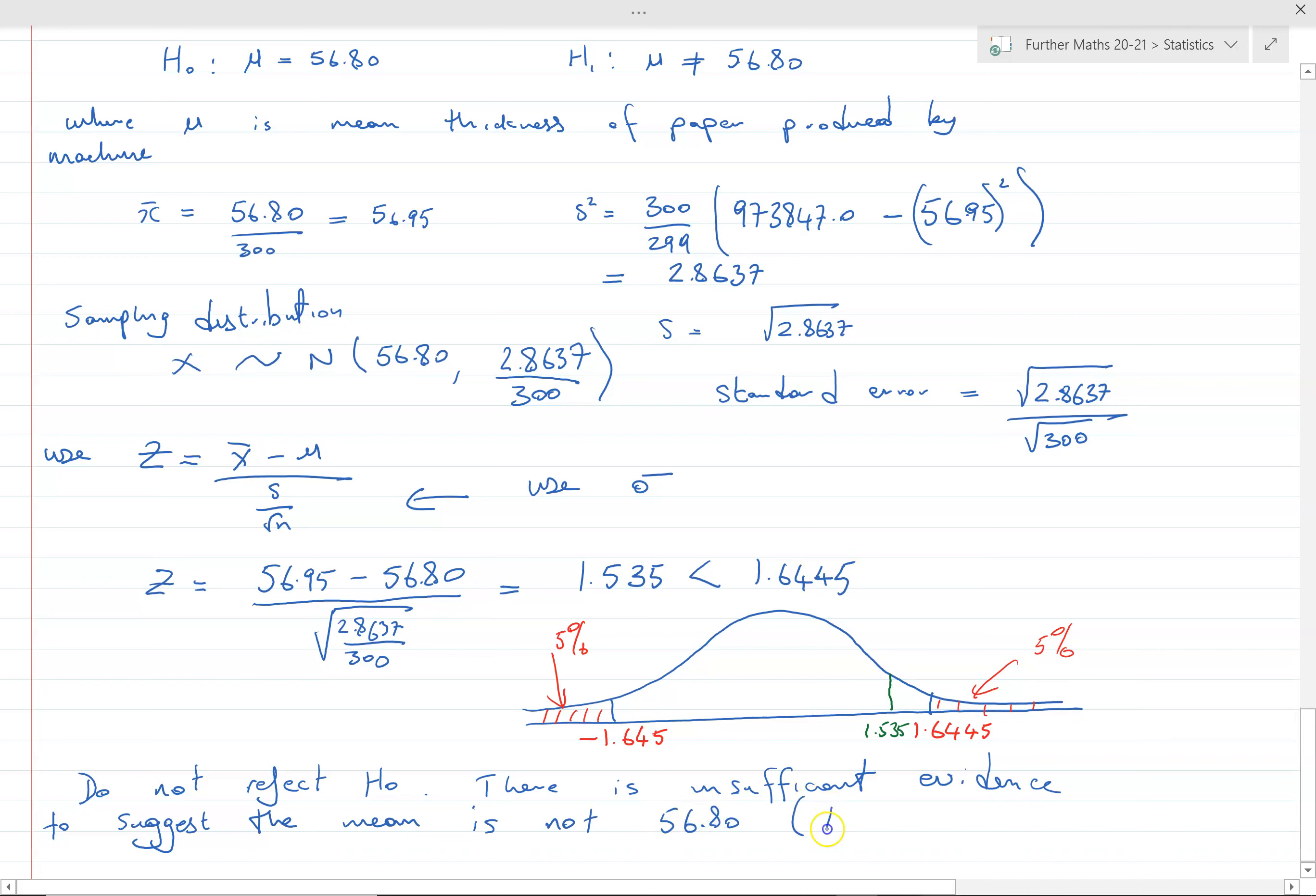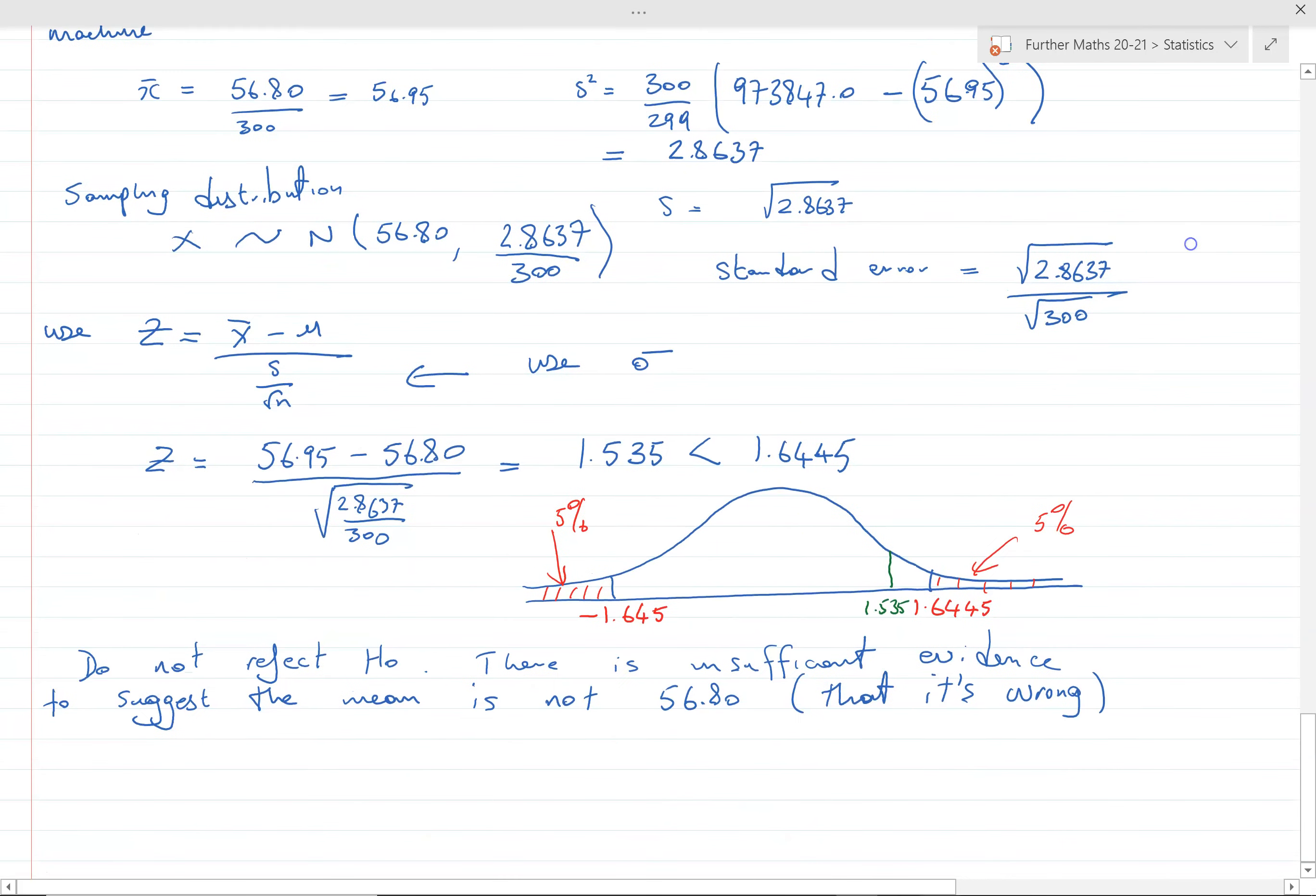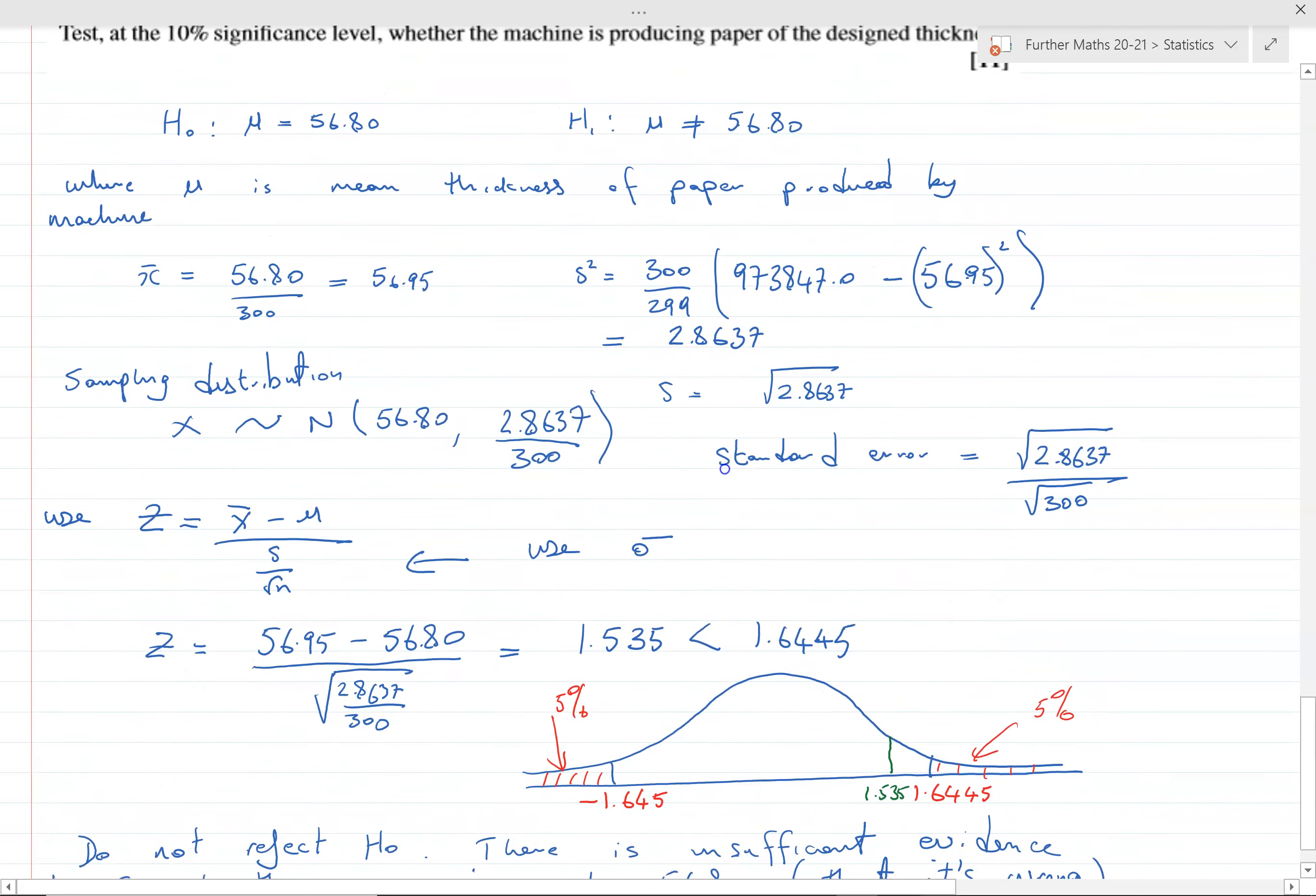If we go back to the original wording of the question, the machine is designed to do that, test at 10% significance whether the machine produces paper of the design thickness. So we could say not the design thickness, that it doesn't do the design thickness. That is wrong.